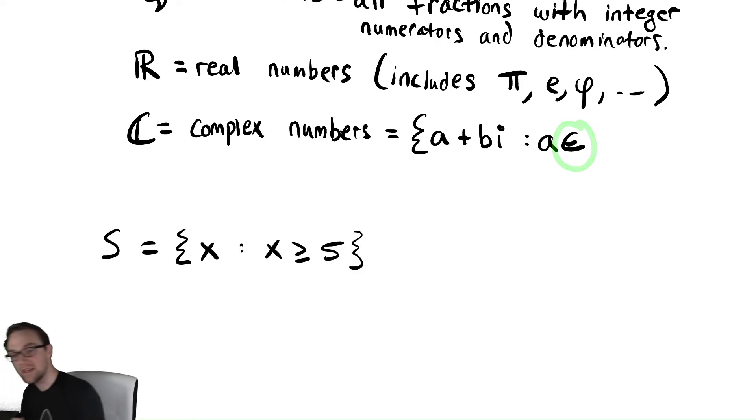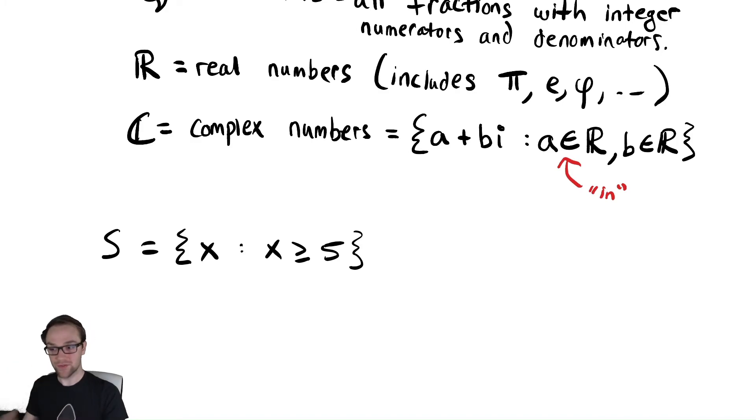This weird E means in. Maybe I'll draw that more carefully to show you. It's in the real numbers and b is in the real numbers. I'm going to write down for you just so we can make sure we know what this means. This is read with the word in. It means that a comes from the real numbers. And just to make sure there's no confusion, i is radical negative one.